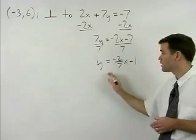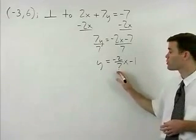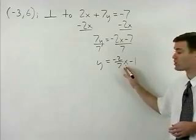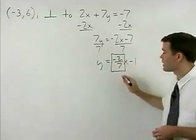Remember that in y = mx + b form the slope of the line will be the coefficient of the x term which in this case is -2/7.